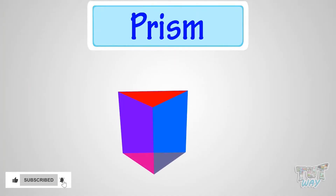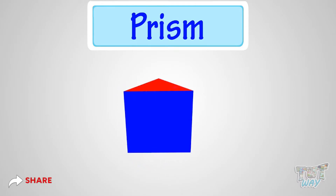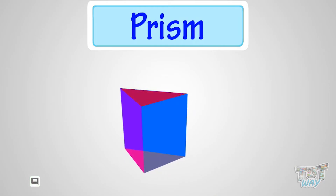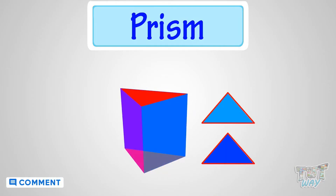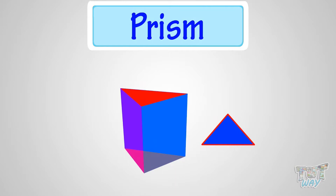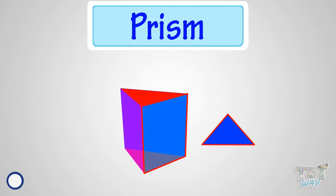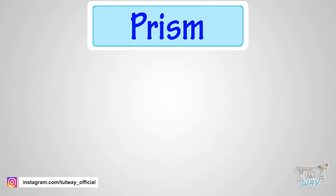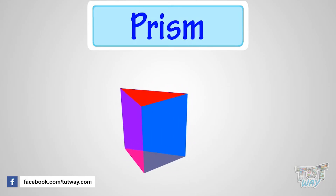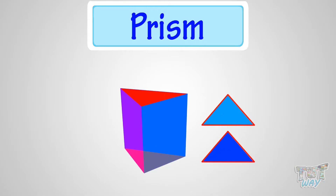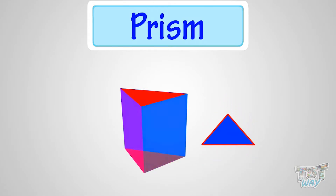What is a prism? In simple words, a prism is a 3D shape in which the top and bottom faces are the same shape and size, and all the other faces are rectangles.